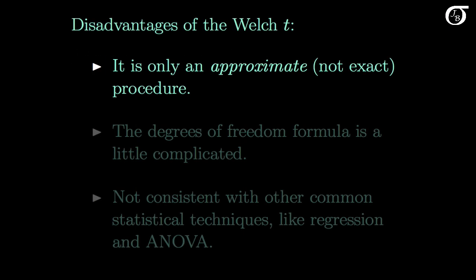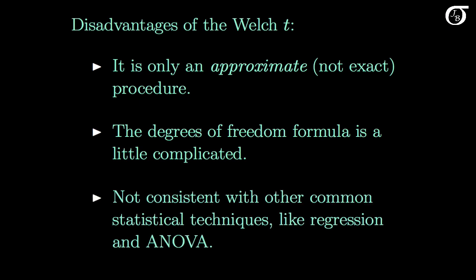Some disadvantages of the Welch or unpooled t: it is only an approximate, not an exact procedure. The degrees of freedom formula is a little complicated, and it is not consistent with other common statistical techniques like regression and ANOVA, meaning our conclusions could differ a little if we're using the Welch procedure versus those other procedures. In my opinion, the fact that it's approximate and the complicated degrees of freedom formula are not a big deal in practice, since we typically carry out calculations using statistical software anyway. But what I do find mildly troubling is that it's not consistent with these other very commonly used procedures.